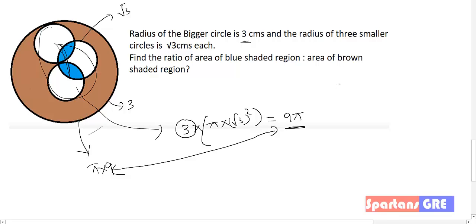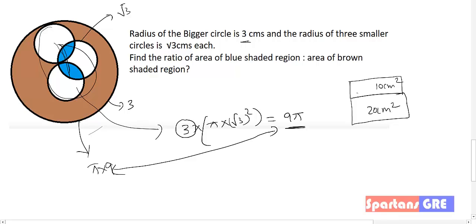Now here is the core concept. Suppose you have one cardboard of area 10 cm² and another cardboard of area 20 cm². If you keep them side by side, their total area is 30 cm².